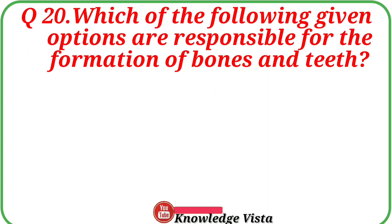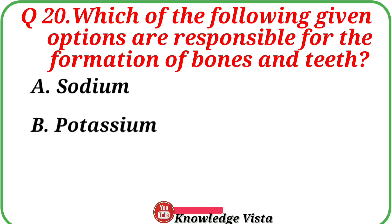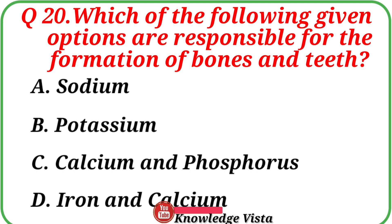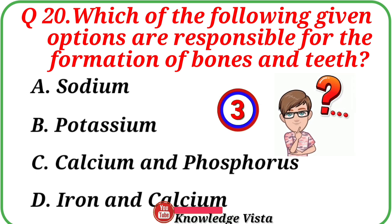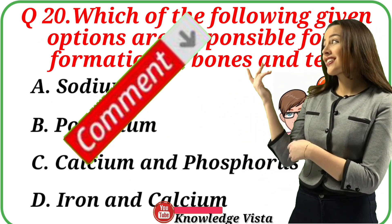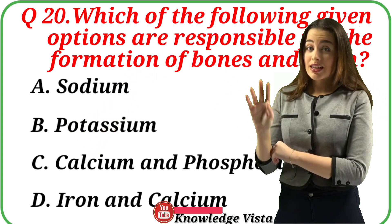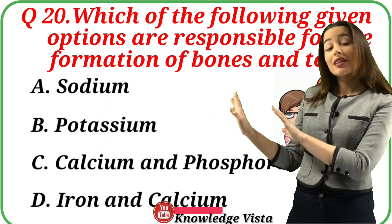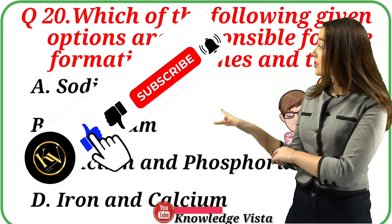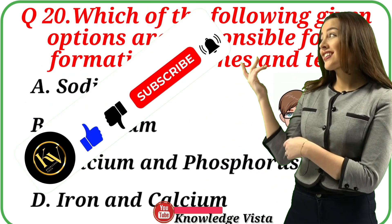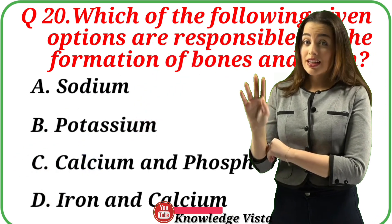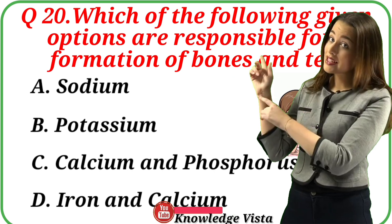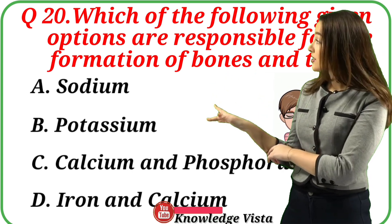Question number 20: Which of the following given options are responsible for the formation of bones and teeth? Your options are: A. Sodium, B. Potassium, C. Calcium and Phosphorus, D. Iron and Calcium. Write the correct answer in the comment box. Thank you for joining us on this knowledge-packed journey. If you enjoyed this video, don't forget to hit the like button and subscribe for more enlightening content. Until next time, stay curious and keep exploring the world of wisdom with us. See you in the next video!